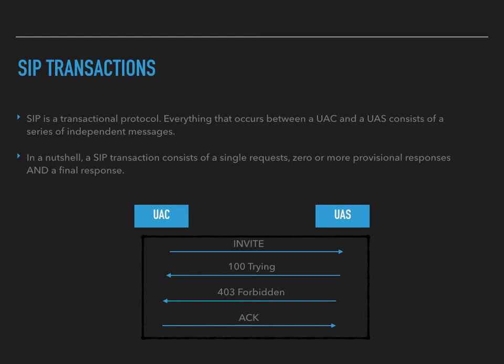Here's an example. We've got a UAC that sends an invite toward a UAS. The invite is sent — that's our request. 100 Trying is the provisional response. And the 403 Forbidden — that's the final response. And finally, we send an ACK to that 403 Forbidden. That whole thing is one transaction.